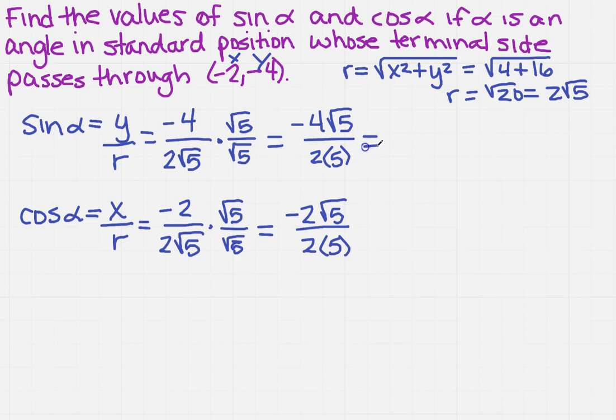So what do I get on top? Well, on top I'm going to get minus 2 square root of 5 over 5. And down here, minus square root of 5 over 5.